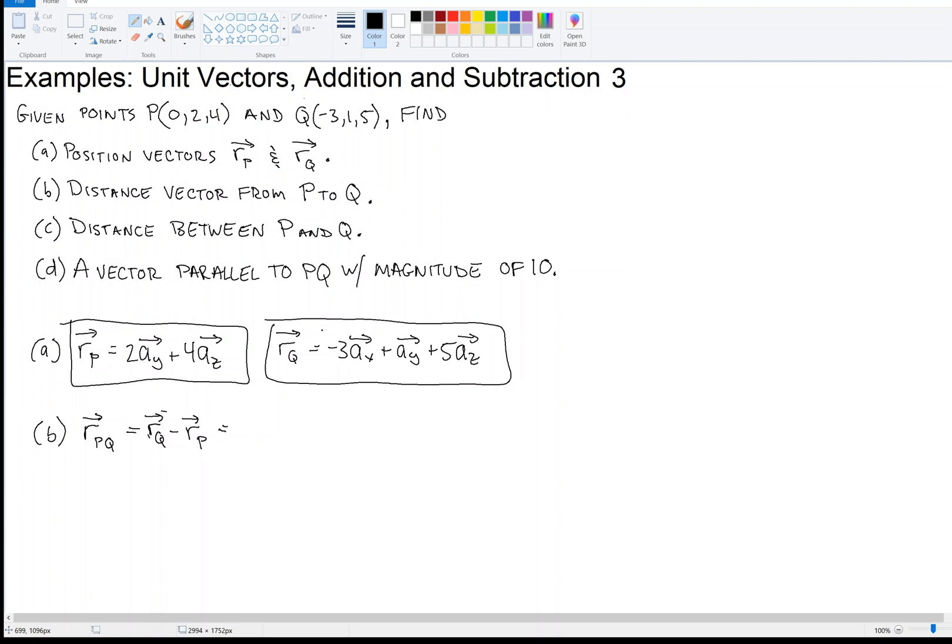So we're going to take Q's, we're going to first start in the X direction. So Q's X component is minus 3, and P's is 0, so we take minus 3 minus 0, so that gives us minus 3 in the X direction.